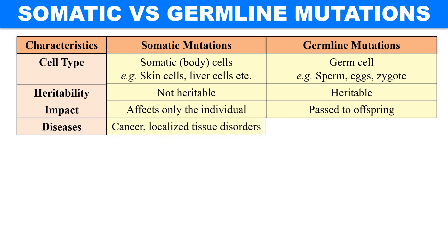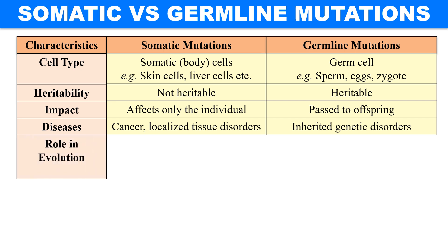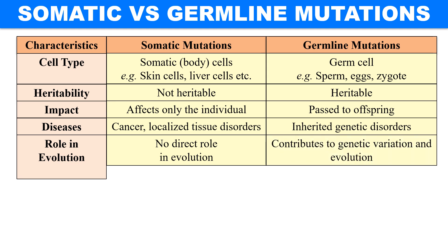Regarding diseases, somatic mutations cause local tissue disorders like some types of cancers, while germline mutations generally cause heritable genetic disorders. Looking at the role in evolution, somatic mutations don't have a direct role in evolution, while germline mutations do play a role because they contribute to genetic variations, and these variations ultimately result in evolution.